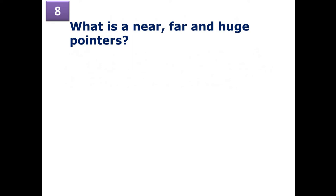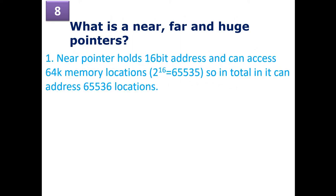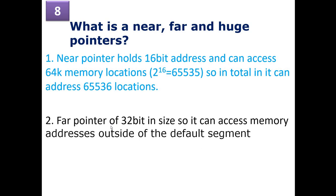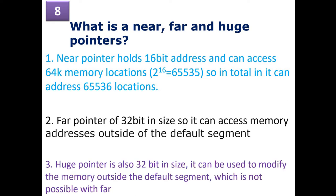What is a near, far, and huge pointer? A near pointer holds a 16-bit address and can access 64K memory locations — that is 2 raised to 16, which is 65,536 locations. A far pointer is 32-bit in size and can access addresses outside the default segment. A huge pointer is also 32-bit in size, but the difference is it can be used to modify memory outside the default segment, which is not possible with a far pointer.